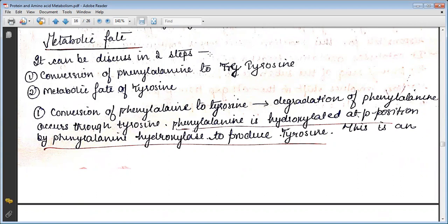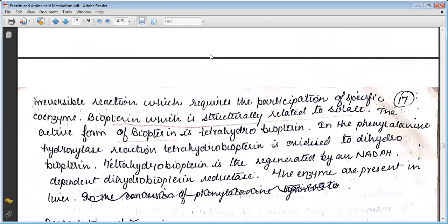Degradation of phenylalanine occurs through tyrosine. Phenylalanine is hydroxylated at the para position by phenylalanine hydroxylase to produce tyrosine. This is an irreversible reaction which requires the participation of a specific coenzyme, biopterin, which is structurally related to folate.